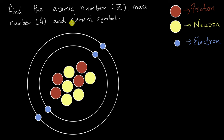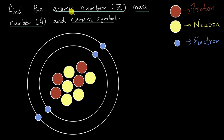So we have to find the element symbol for this element, the mass number A, and the atomic number Z. Remember, the atomic number is represented by Z and the mass number by A. I always used to get confused and write atomic number A, but no — the mass number is A. These letters are coming from the German words for mass number and atomic number, but we won't get into that in this video.